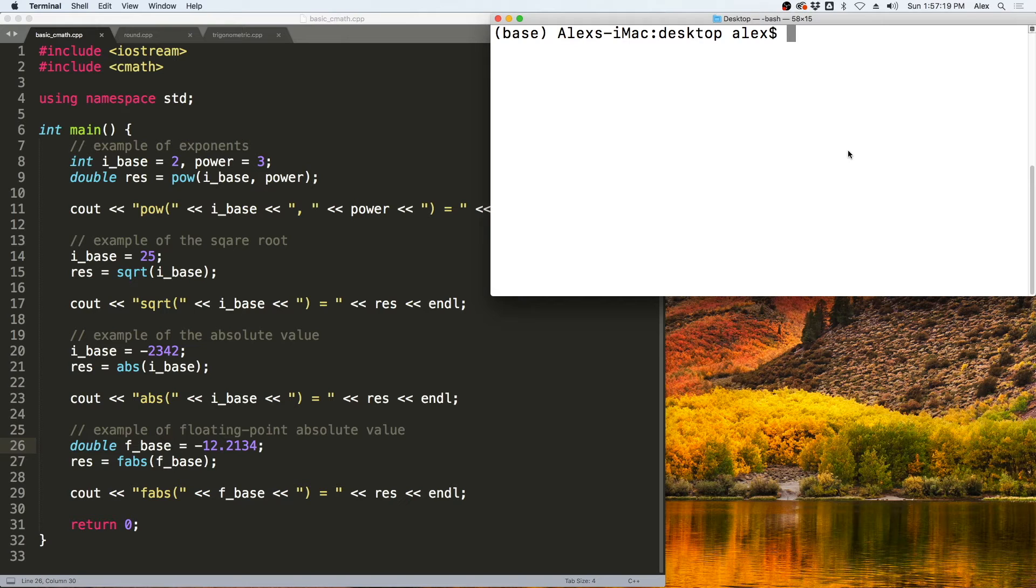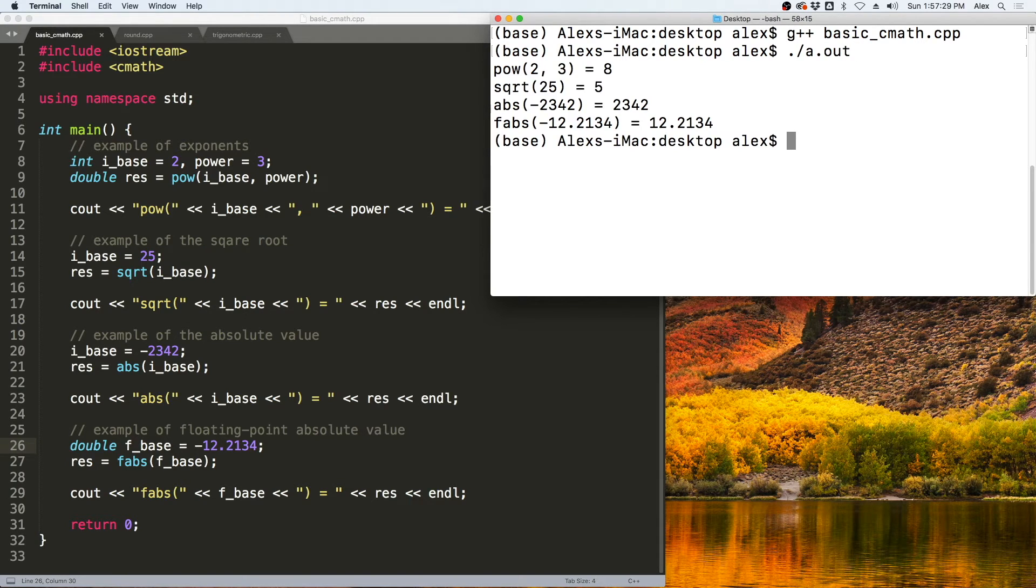Let's come over here to a terminal and compile this program. Once that is done compiling, we can run it with ./a.out. You will see we get the expected output of the power of 2 to 3 is 8, the square root of 25 is 5, the absolute value of negative 2,342 is positive 2,342, and the floating point absolute value of negative 12.2134 is positive 12.2134.